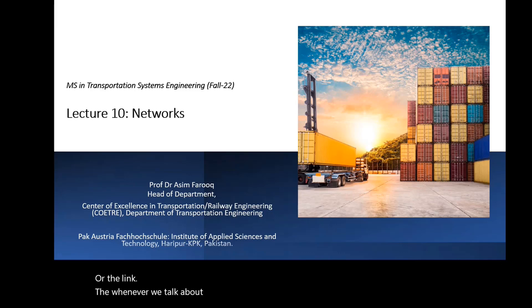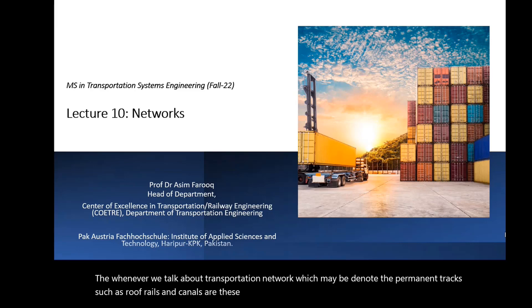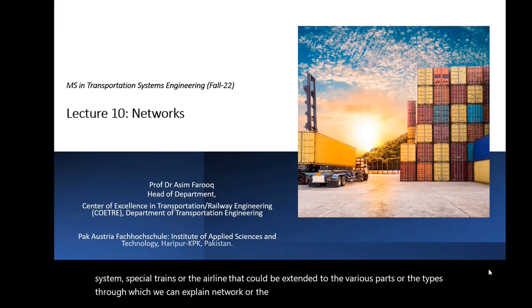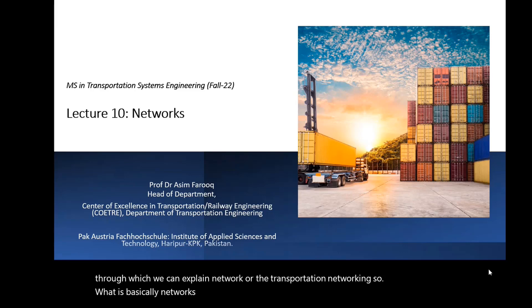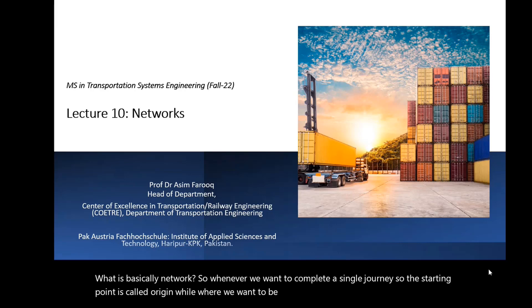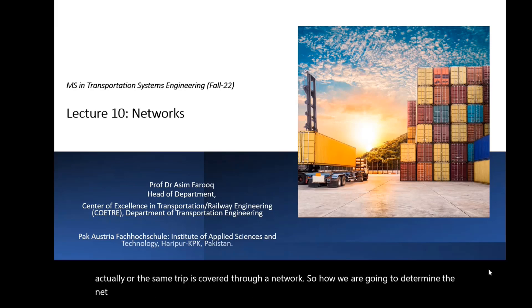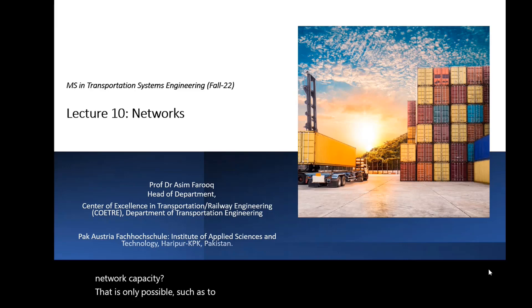When we talk about a transportation network, it may denote permanent tracks such as roads, rails, and canals, or scheduled ones such as special public transportation systems, special trains, or airlines. To determine network capacity, we measure speed, capacity, frequency, travel time, etc.